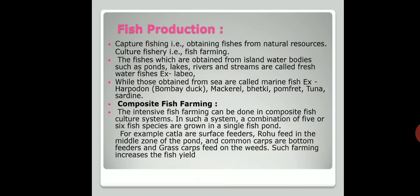In composite fish farming, some fish are surface feeders in the water, and species like carp and grass carp feed at different levels. This variety of fish can be grown together in one pond at the same time, making efficient use of the pond's resources.